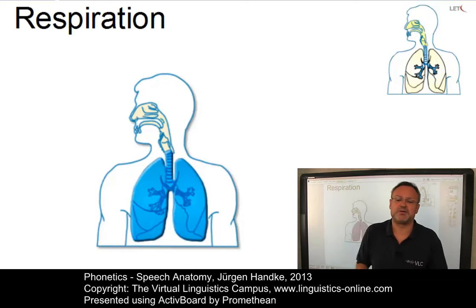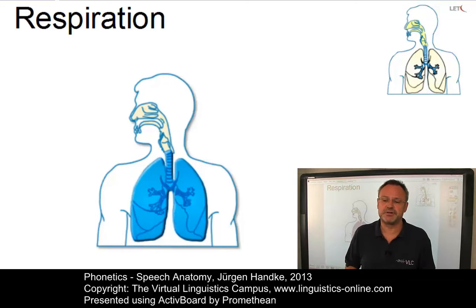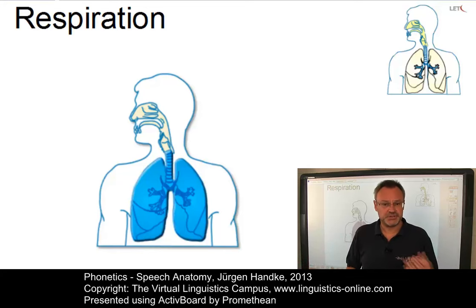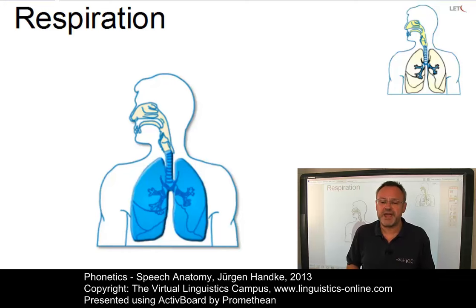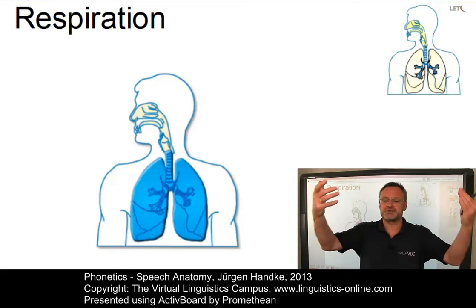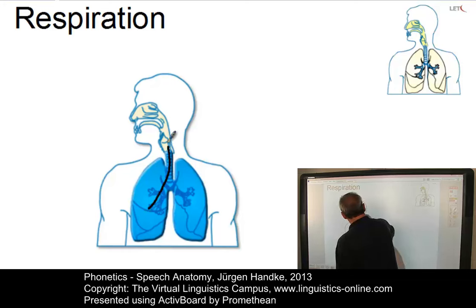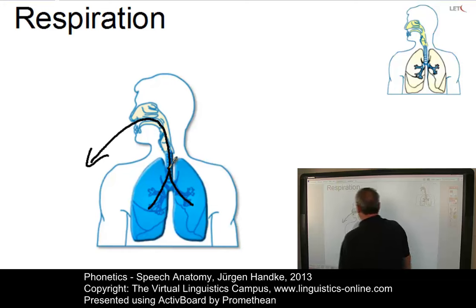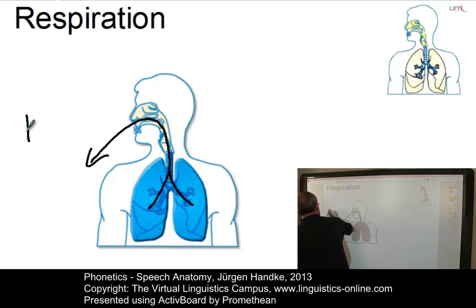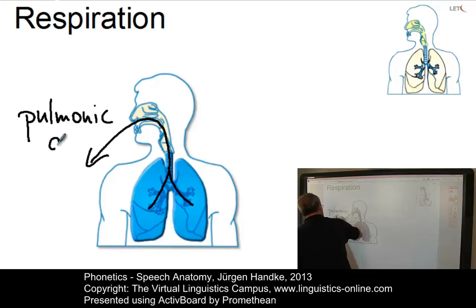Before any sound can be produced at all, there has to be some form of energy. In speech, the energy takes the form of a stream of air, normally coming from the lungs. Lung air is normally referred to as pulmonic air.